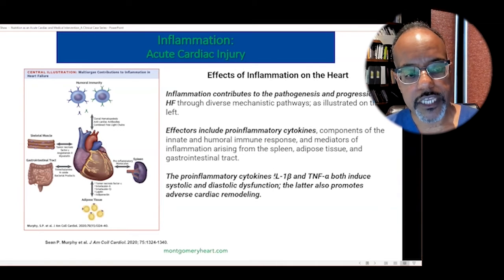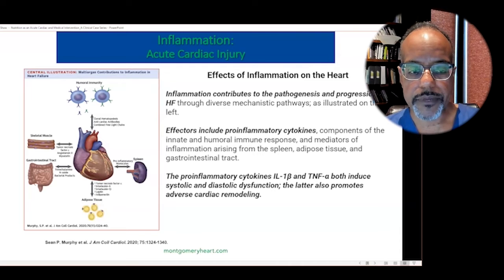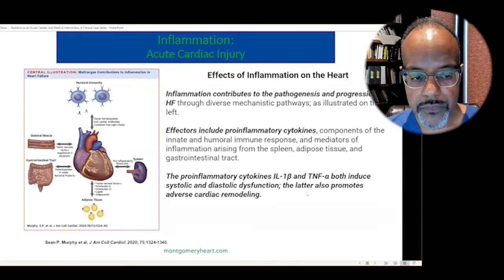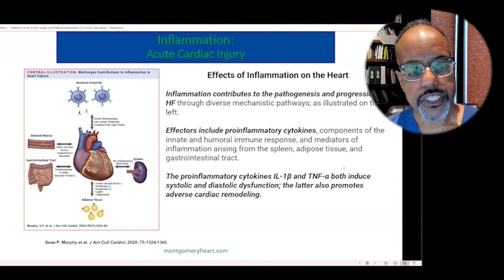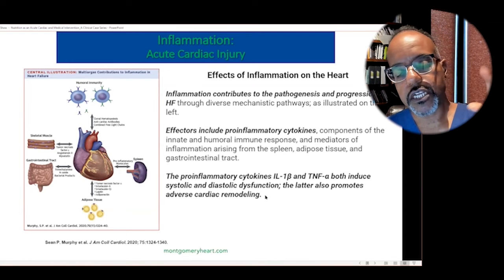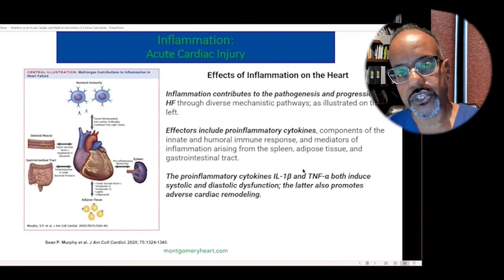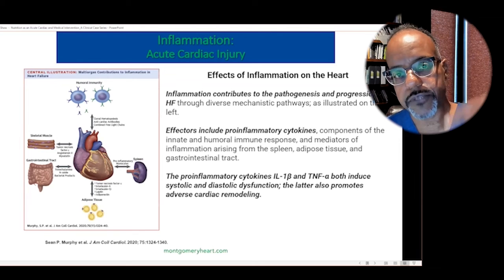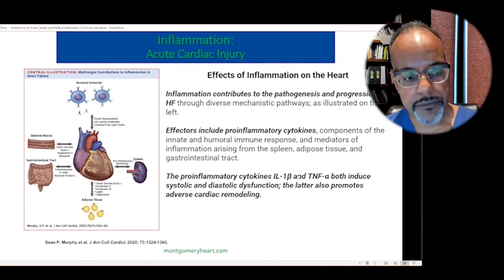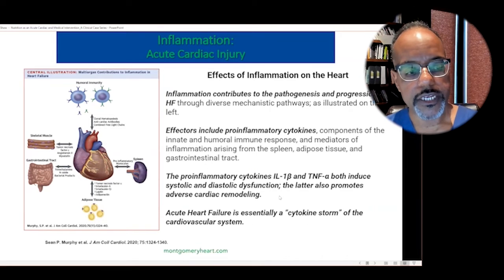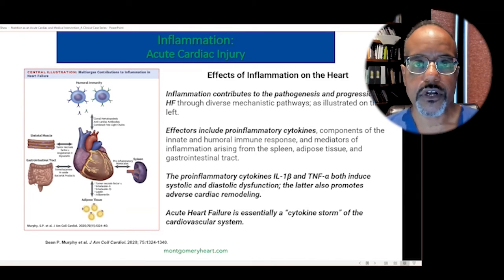These pro-inflammatory cytokines — some that have been identified include IL-1 beta and TNF alpha. These cytokines have been associated with abnormal heart function. Systolic dysfunction is when the heart doesn't contract normally — it doesn't squeeze or eject blood normally. Diastolic dysfunction is when the heart doesn't relax normally, doesn't fill normally. The cardiac output is impaired if the filling and release of blood is abnormal. Acute heart failure can be thought of as a cytokine storm of the cardiovascular system.